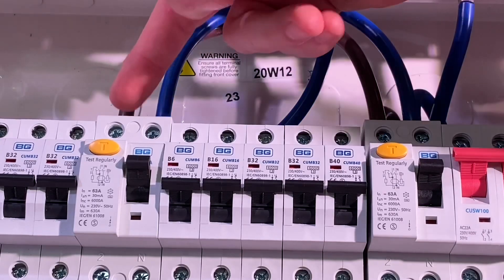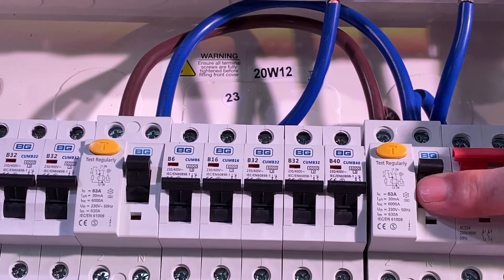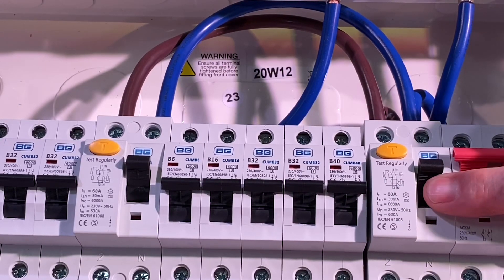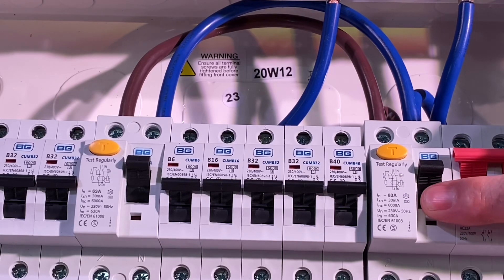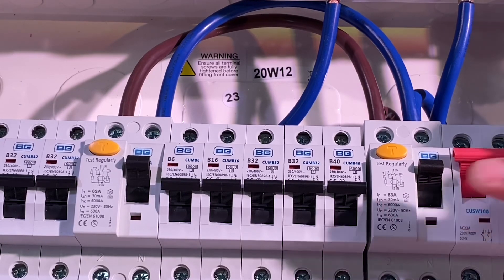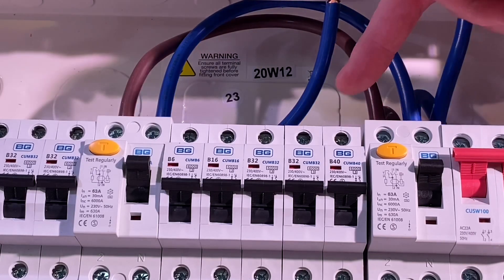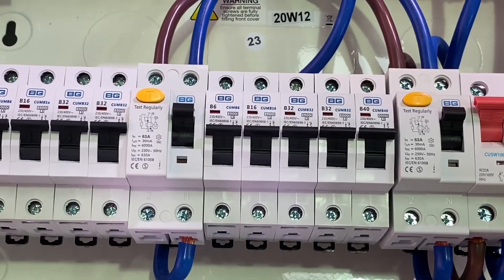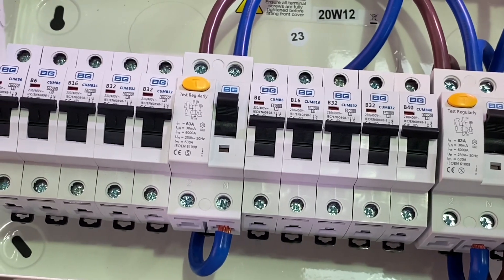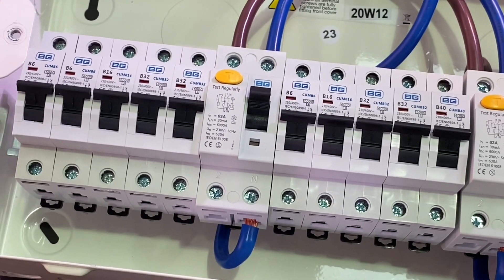Let's first look at the two RCDs. They're both rated at 63 amp, both type A RCDs and are rated at 30 milliamps to offer additional protection. The board comes fully loaded with 10 breakers, all B-type. It comes with 1x40, 4x32s, 2x16s and 3x6-amp breakers.